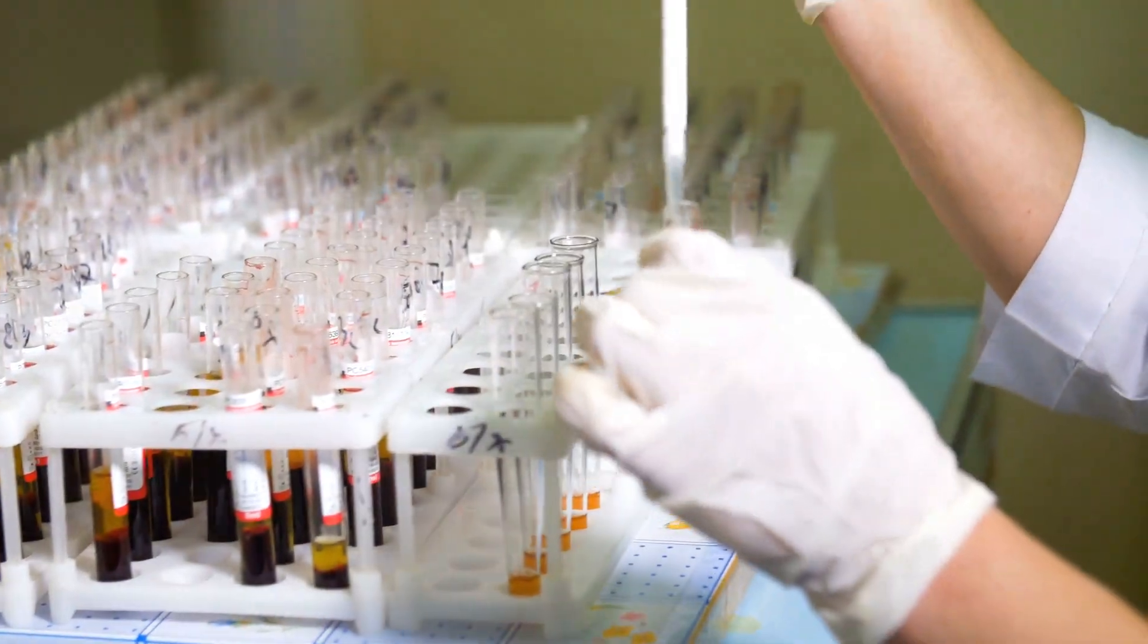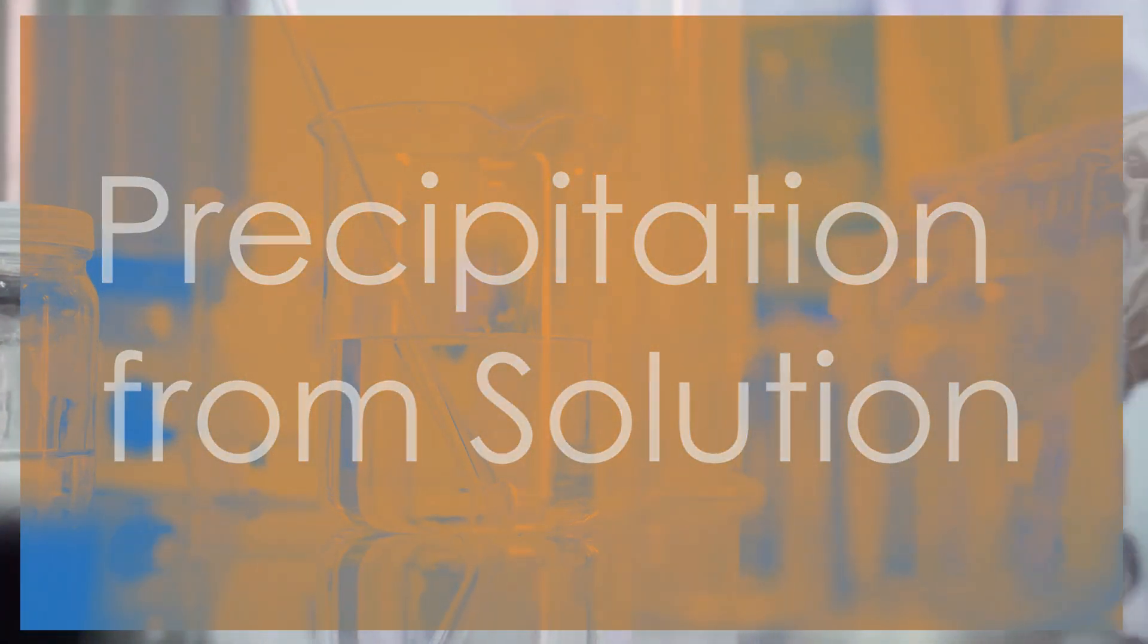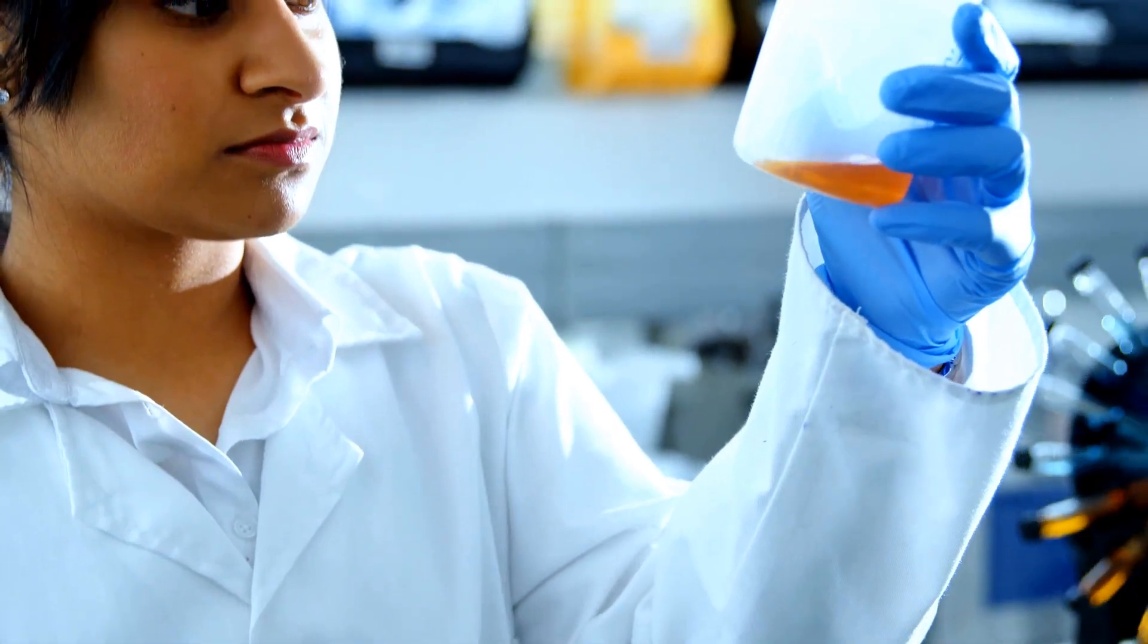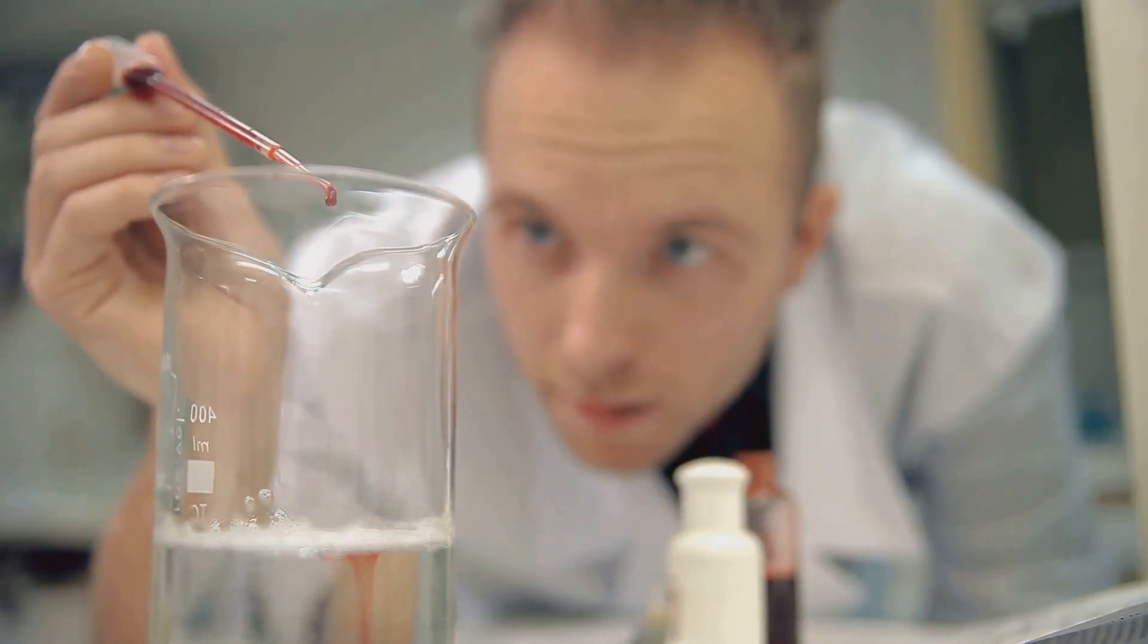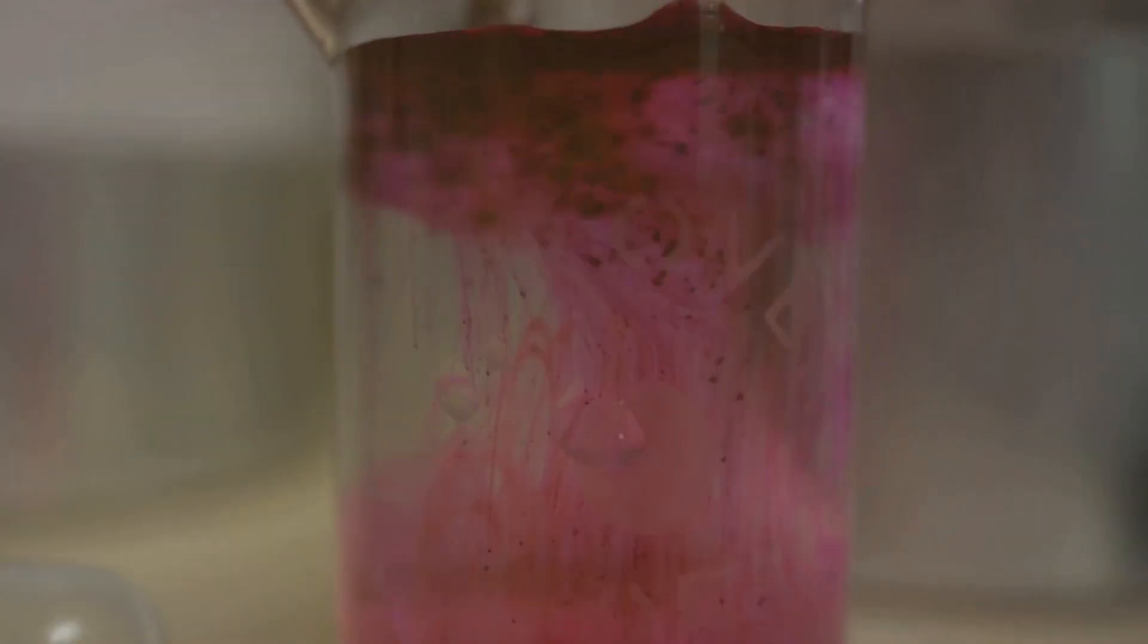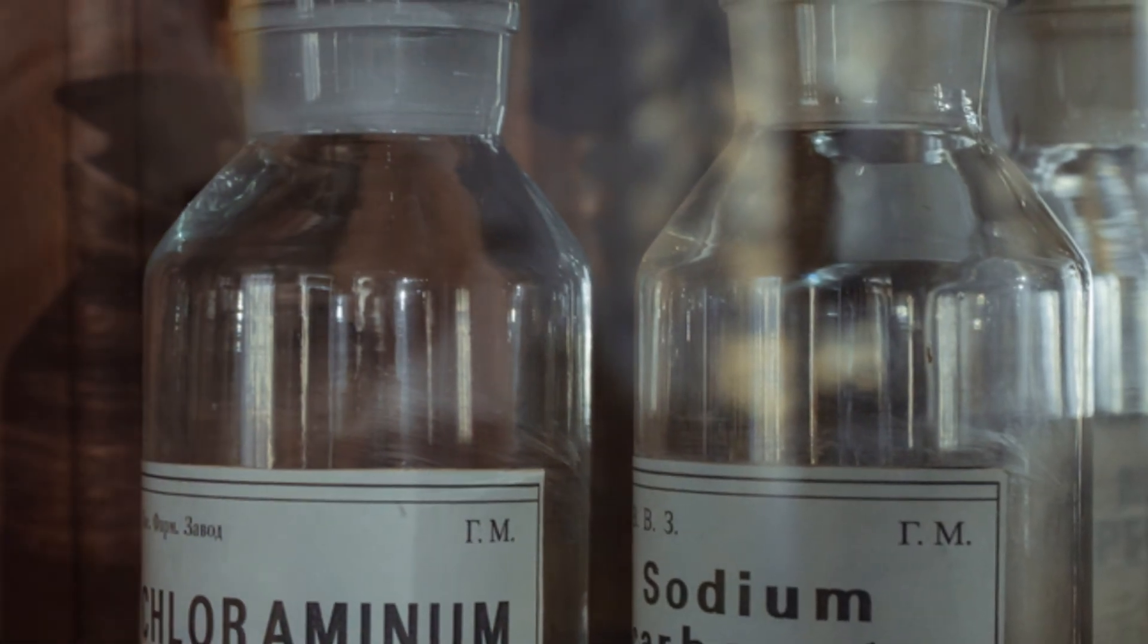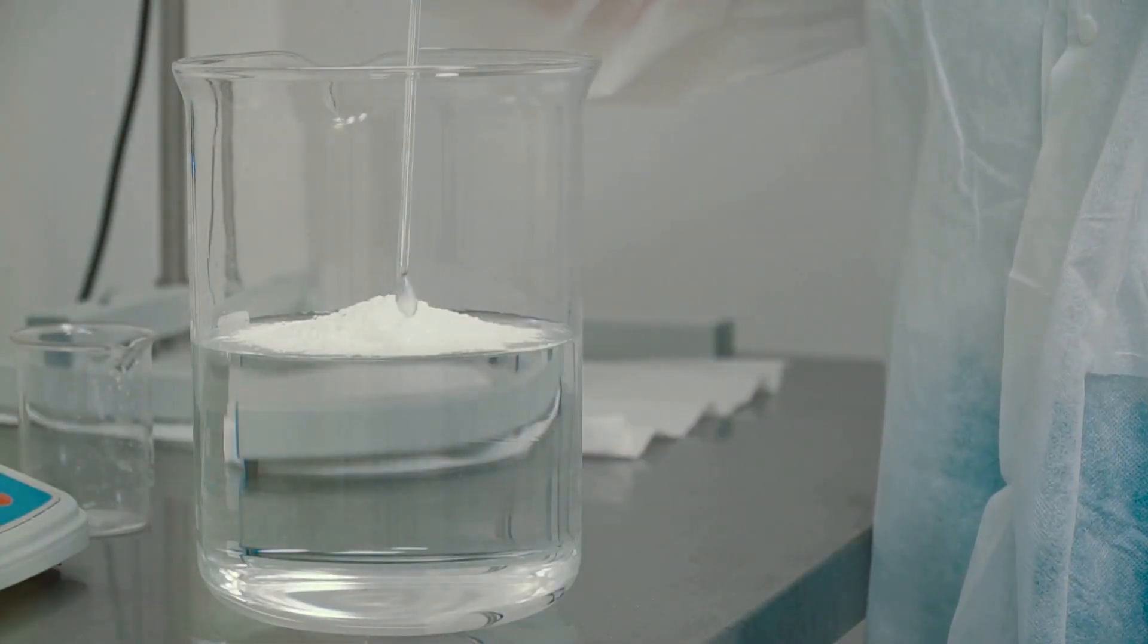Precipitation from solution. With the gold dissolved in our aqua regia solution, we now need to coax it out of its liquid disguise. To do this, we'll use a process called selective precipitation. This involves adding a chemical that will react with the gold ions in solution, causing them to solidify and separate from the liquid. The chemical we'll use for this step is called sodium metabisulfite.